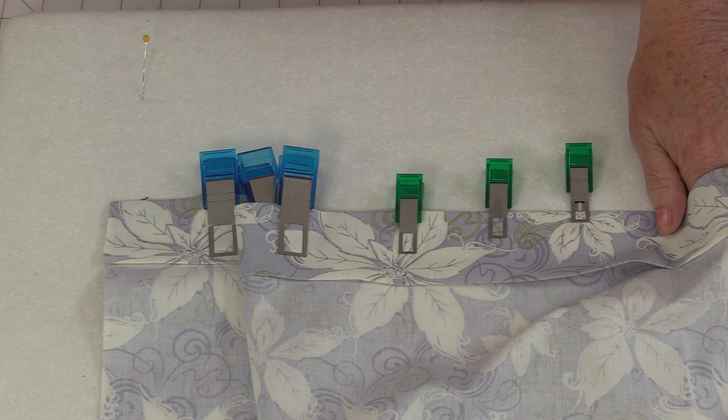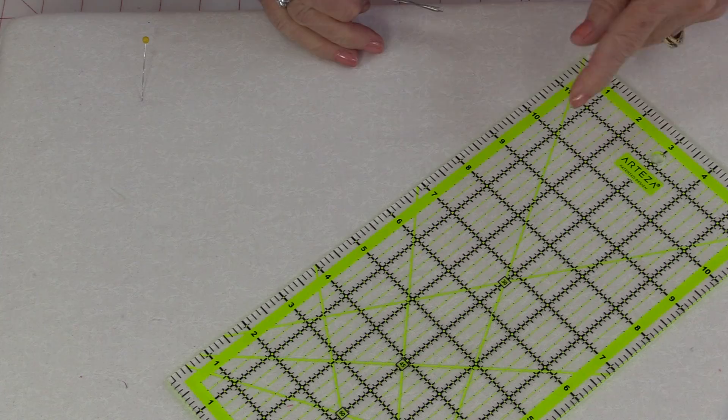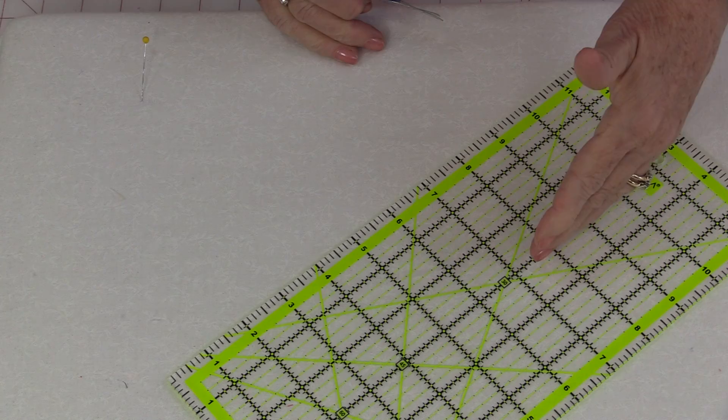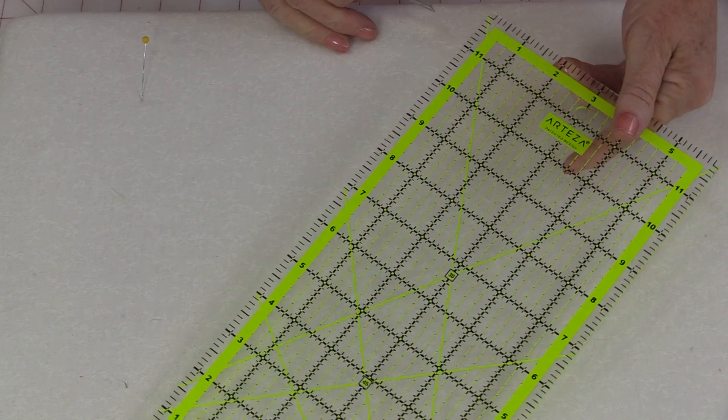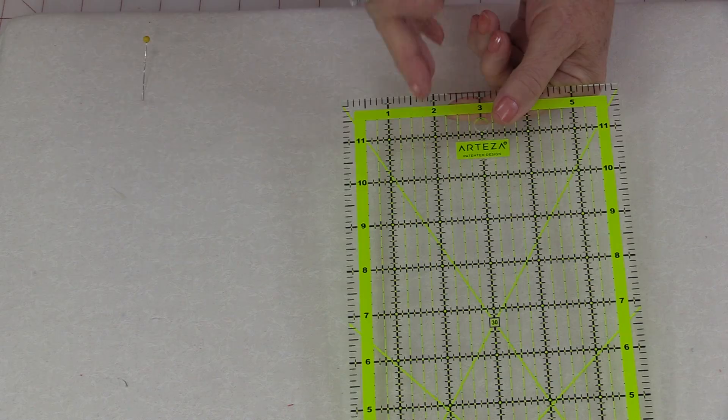When we're cutting a lot of strips at the same time, we're always having to check every single measurement to make sure that we're the exact mark that we want to be on. For example, if I want to cut a pile of strips at two inches, every strip I'm going to have to make sure that I'm on that two-inch strip mark.